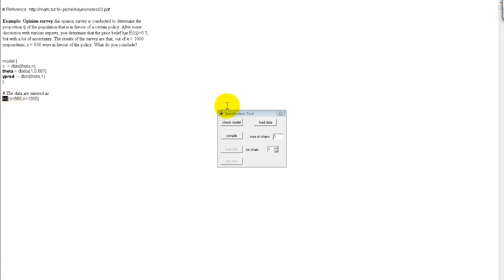We're going to load the data. The data is loaded. We're just going to do one chain. We're going to compile that. And then generate our initial values.